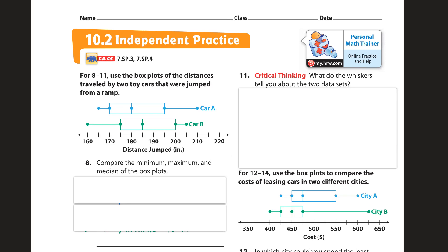Hi and welcome to the independent practice for lesson 10.2. We're talking about comparing data sets. The first thing we have here is a box and whisker plot for numbers 8 through 11. This shows the distances traveled by two toy cars that were jumped from a ramp, measured in inches. We have car A and car B with box and whisker plots for both.